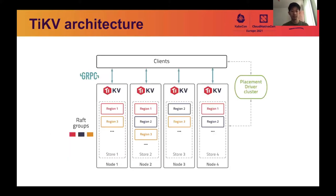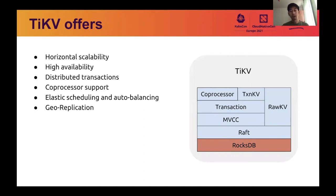Here is a picture showing the overall architecture of TiKV. The full data range is split into small areas called regions, and there are three replicas per region by default. The replicas are scattered across different TiKV nodes and kept consistent by Raft. The placement driver stores the metadata of regions to provide clients with region routing information, and it is also responsible for auto sharding and load balancing.